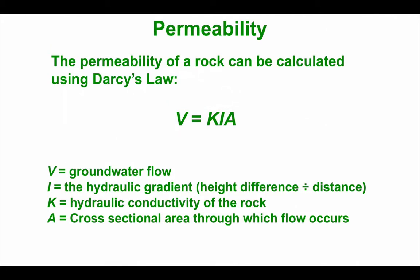To measure or calculate permeability, we can use an equation called Darcy's Law. It states that the velocity of groundwater flow is equal to the hydraulic conductivity of the rock — how good the rock is at letting water or other fluids pass through it — multiplied by the hydraulic gradient, which is the height difference divided by the distance, and then multiplied again by the cross-sectional area through which the flow occurs. In class, we'll work through some examples of calculating the permeability of a rock.